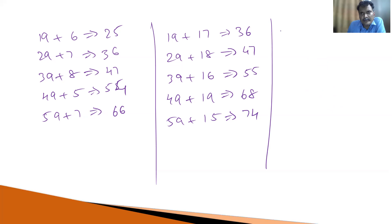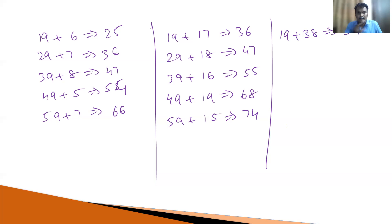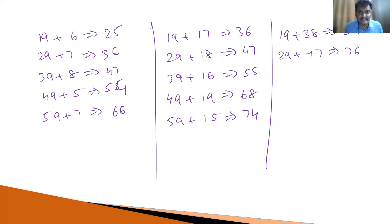Suppose 19 plus 35. What is the answer? 19 becomes 20. 20 plus 35 is 55. Minus 1, that is equal to 54. Any doubt? No, sir. Very good. Suppose 29 plus 47. What is the answer? 29 is 30. 30 plus 47 is 77. 77 minus 1 — 76 is the answer.